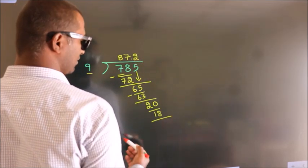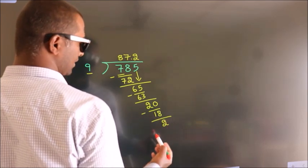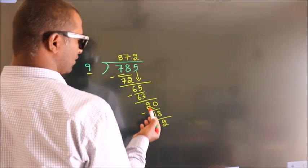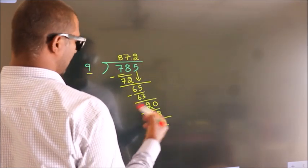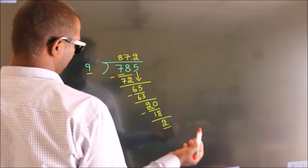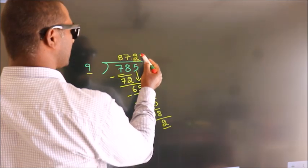Now we subtract and we get 2. Now you observe, we had 2 here and we got 2 again. That means this number keeps on repeating.